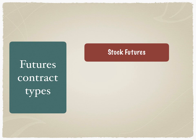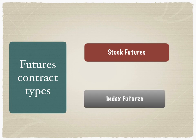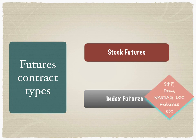Futures contract types could be stock futures on individual stocks, or index futures on underlying indices like the S&P, Dow, and Nasdaq 100. In most markets, index futures are the most traded. In India, the Nifty 50 is the most extensively traded futures contract compared to stock futures, because it is a parameter of the underlying market performance — bullishness, bearishness, and market sentiment.